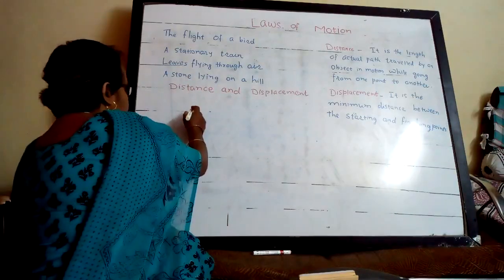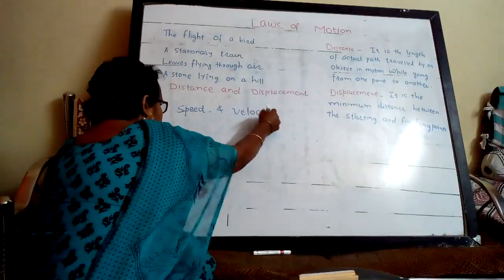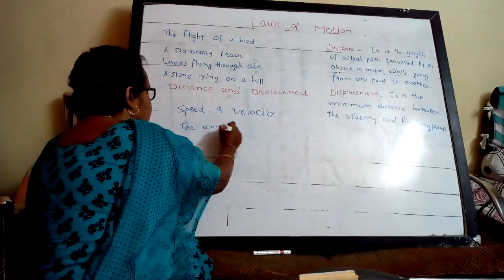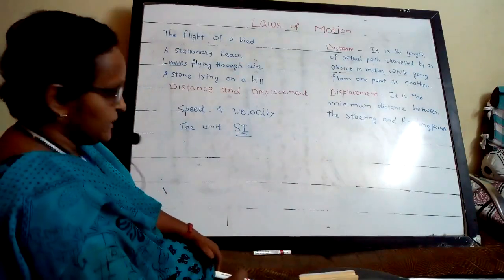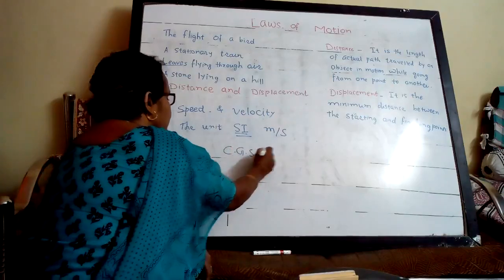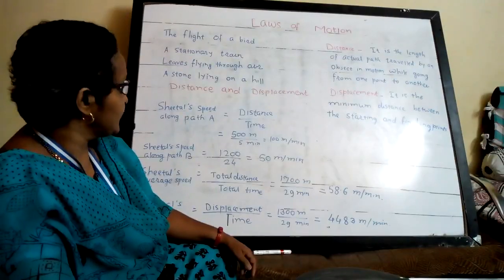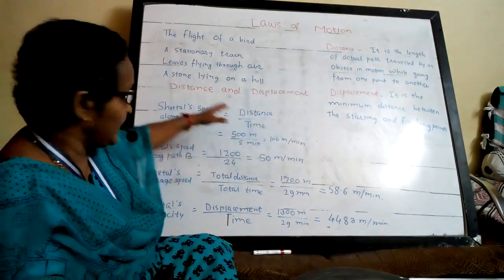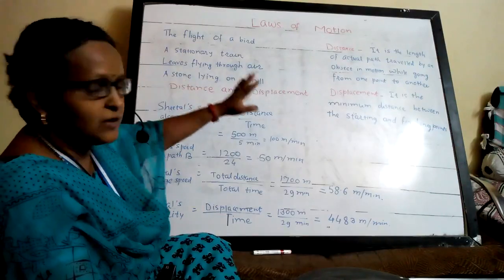The unit for speed and velocity — since the length of path is covered in time, the unit will be the same for both speed and velocity. The SI unit for speed and velocity is meter per second, and the CGS unit is centimeter per second. The differentiation: distance is a scalar quantity, displacement is a vector quantity; speed is related to distance, and velocity is related to displacement.